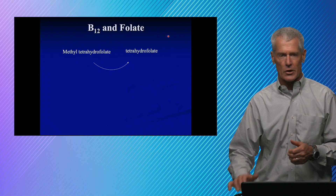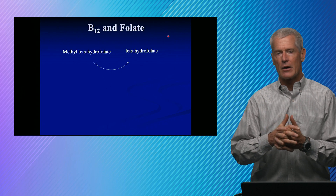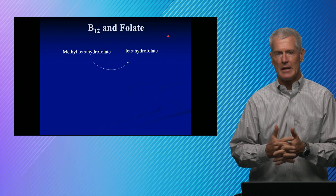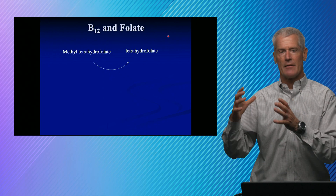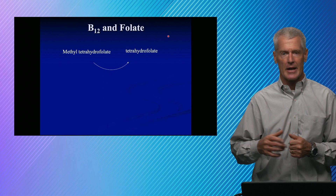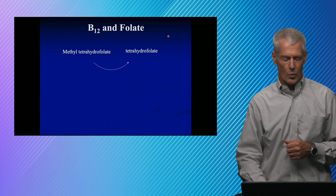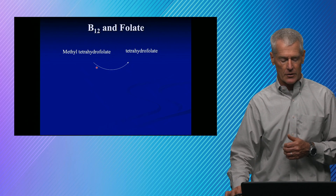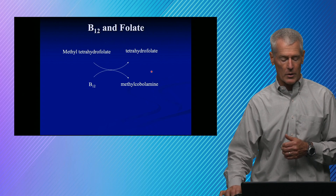B12: we talked about iron deficiency causing a microcytic anemia. In the case of B12 and folate deficiency, you get anemia but it's a macrocytic anemia — instead of having small red cells, you have large red cells, indicated by an elevated MCV, or mean corpuscular volume. Methyl tetrahydrofolate gets converted into tetrahydrofolate using B12. B12 is a cofactor to form methylcobalamin.